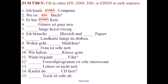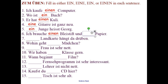Number 4: 'Eine Gitarre ist ganz neu' — A guitar is quite new. Number 5: 'Ein Junge heißt Georg' — A boy is called Georg. Number 6: 'Ich brauche einen Bleistift und ein Papier' — I need a pencil and a paper.